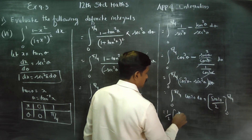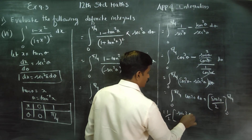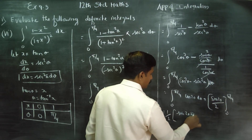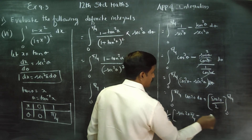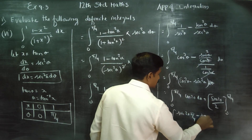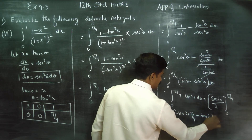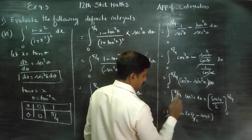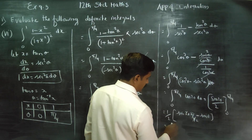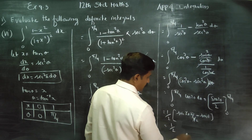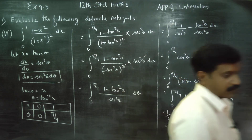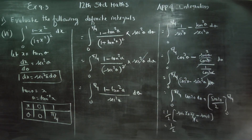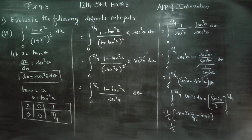Substituting pi by 4: sin(2 times pi by 4) minus sin(0). That is sin(pi by 2) minus 0. Sin 90 degrees is 1. So the result is 1 by 2 times 1, which equals 1 by 2. Therefore, the final answer is 1 by 2.